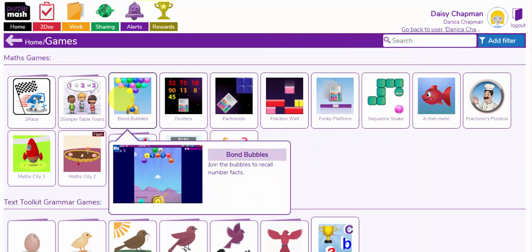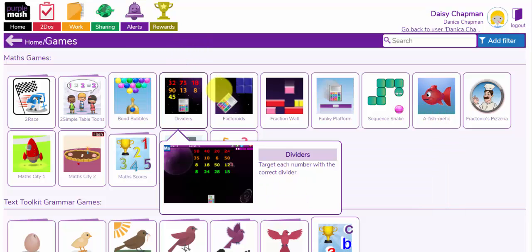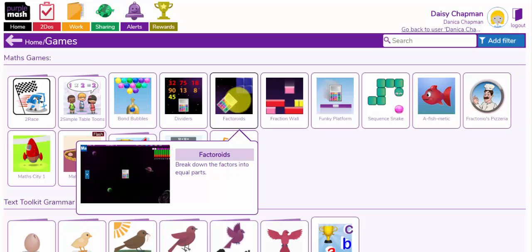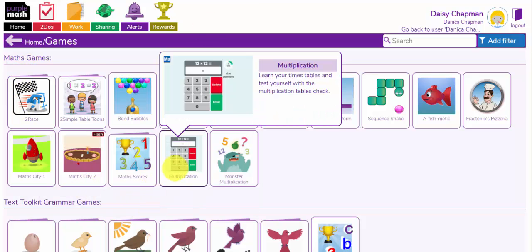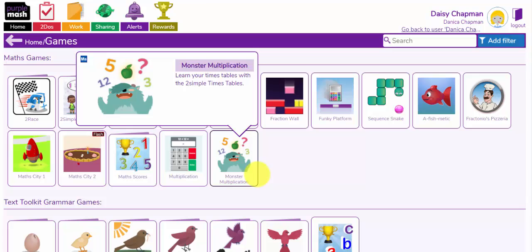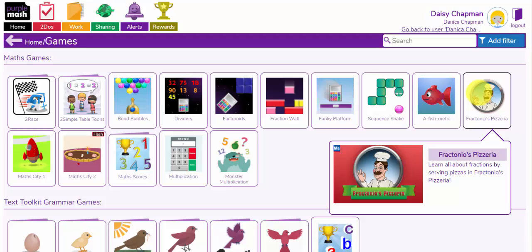Some of these games such as Bond Bubbles and Fishmatic can be used with your youngest children for counting and adding numbers to 5 or 10 or 20. Some of the other games such as Dividers and Factoroids can be used with older children. You also have some brilliant tools such as Two Race, Multiplication Tools and Monster Multiplication. You have other tools that teach the concept of fractions. This tool, Fractonio's Pizzeria, gives your children the chance to explore fractions and serve pizzas at the same time.